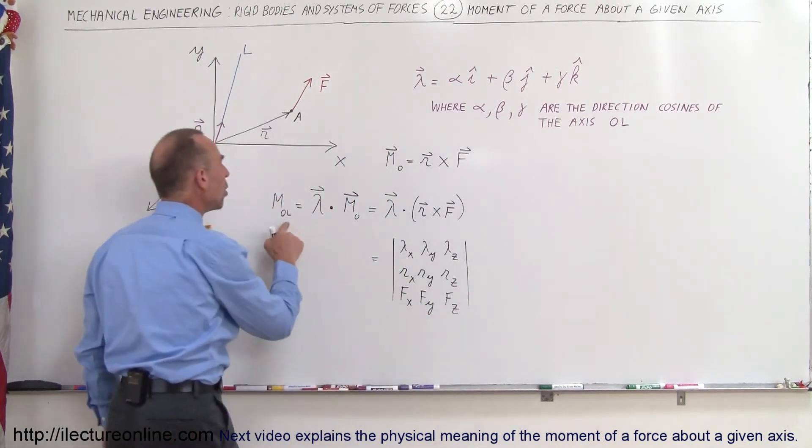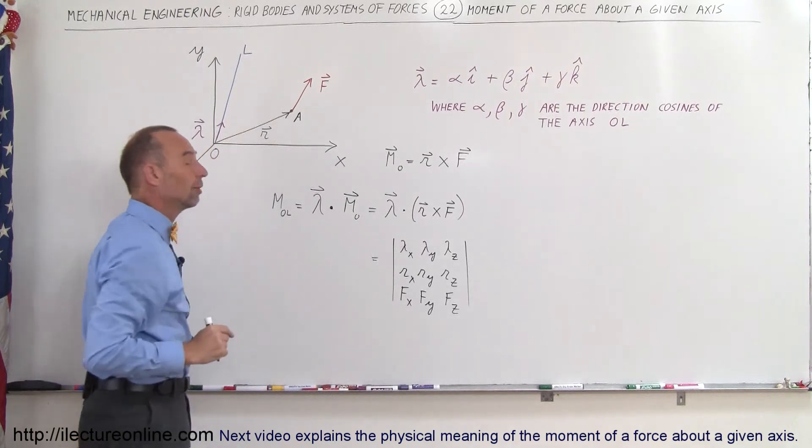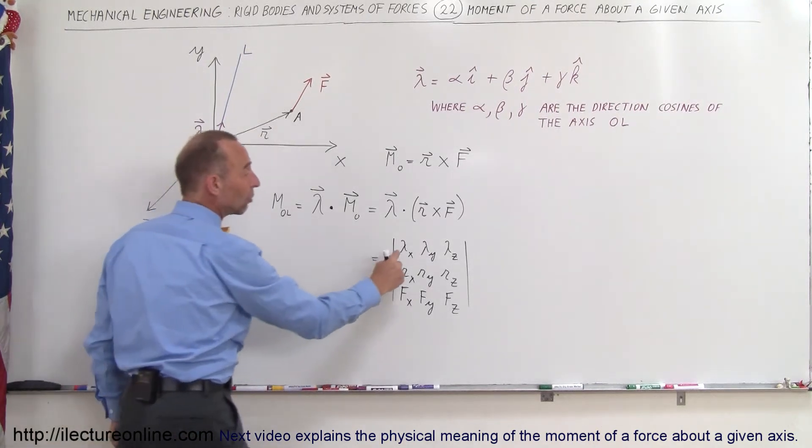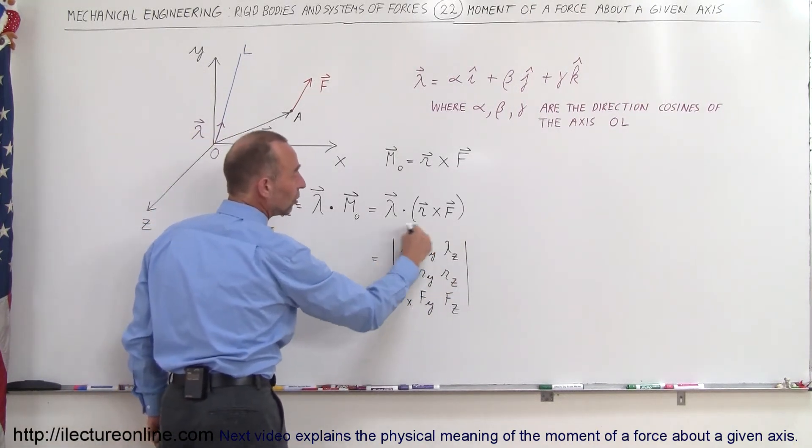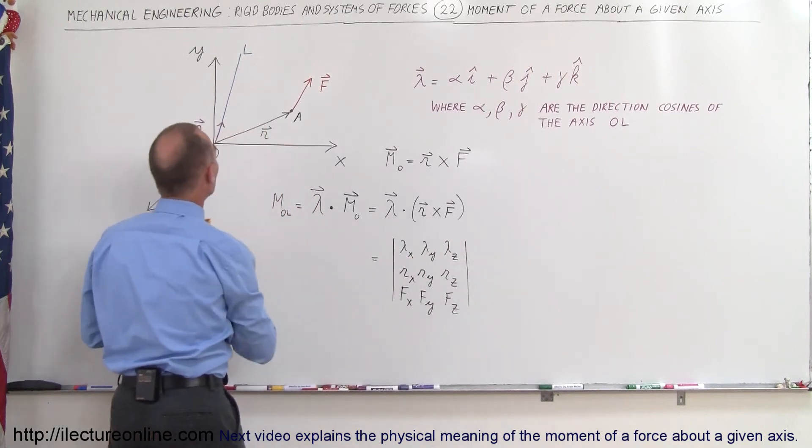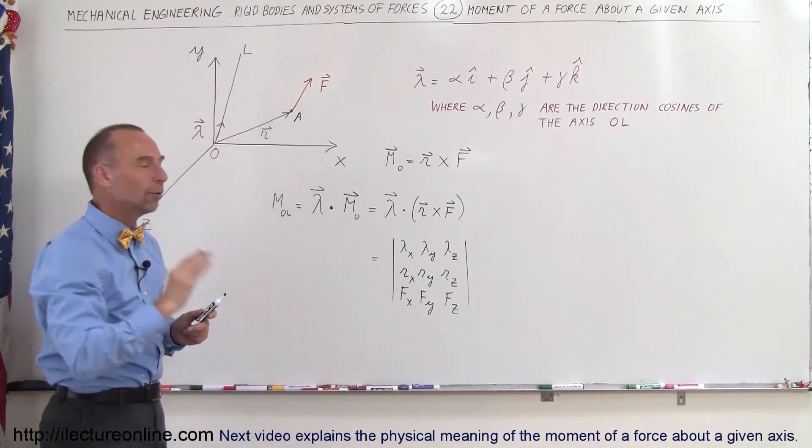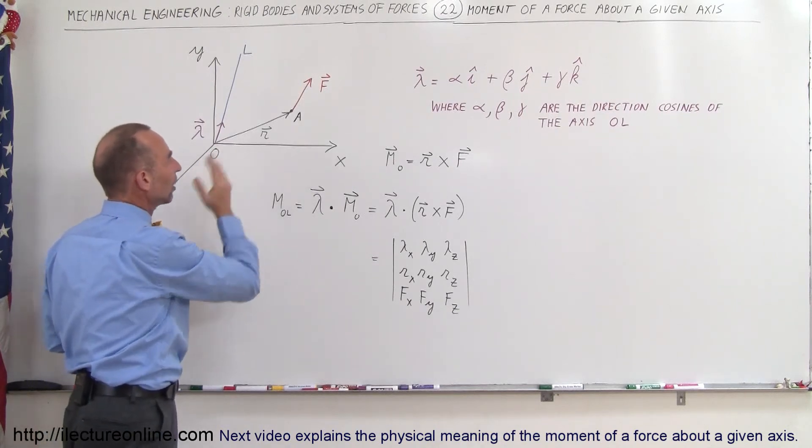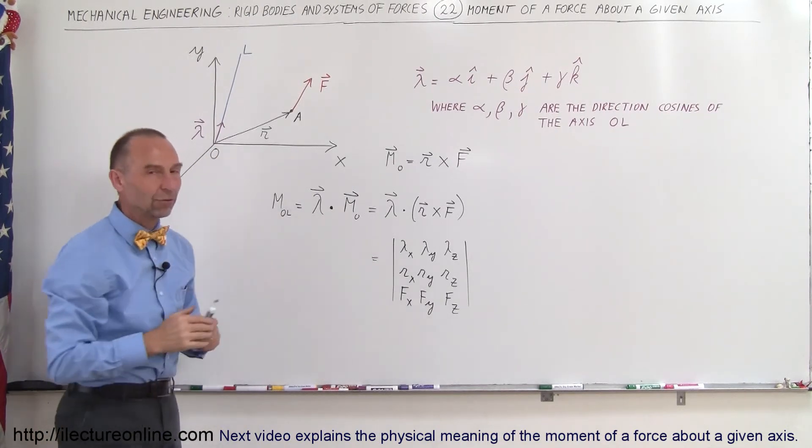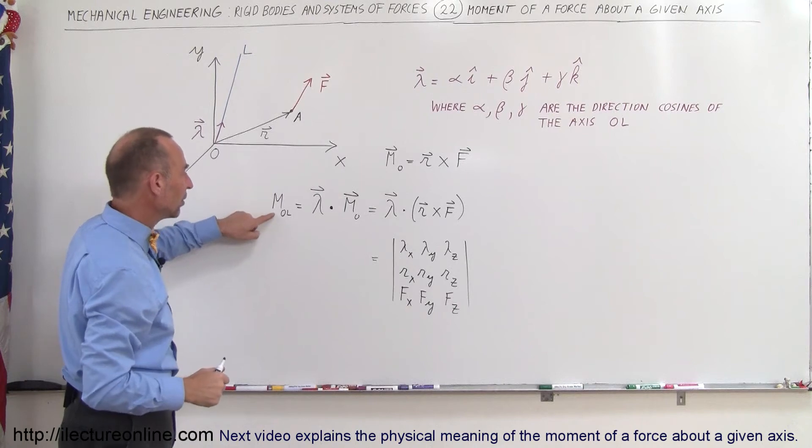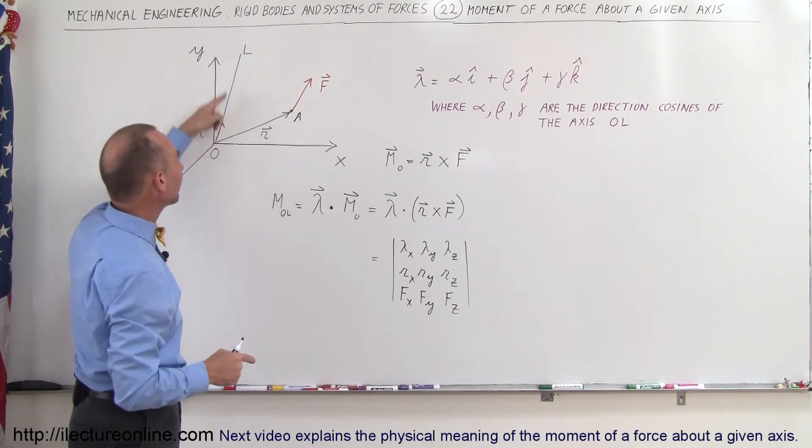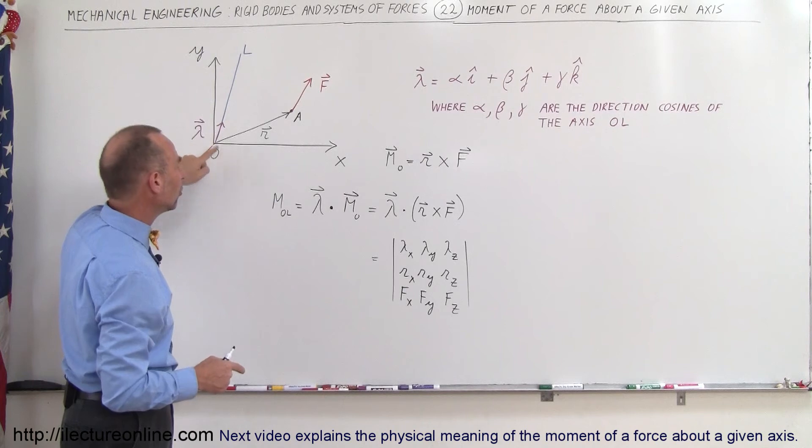That will give us the moment about any arbitrary axis, as long as we have the direction of that axis using the unit vector. Notice also that the axis goes through the origin—that is why we can do that. Later we'll do a case where the axis is not through the origin, and then we'll have to do it slightly differently.